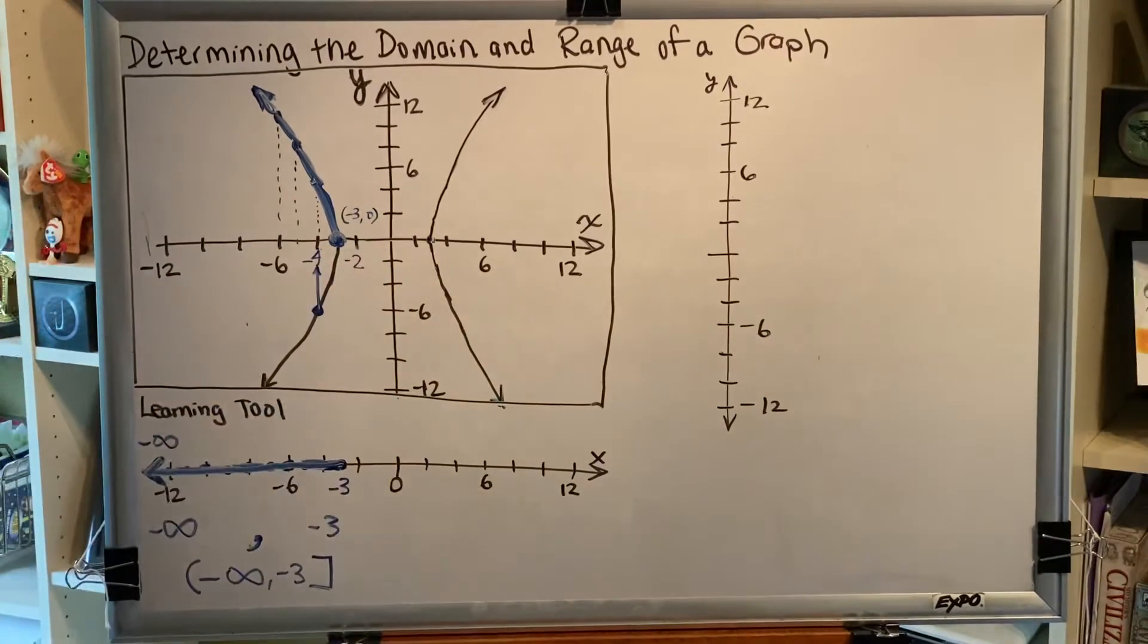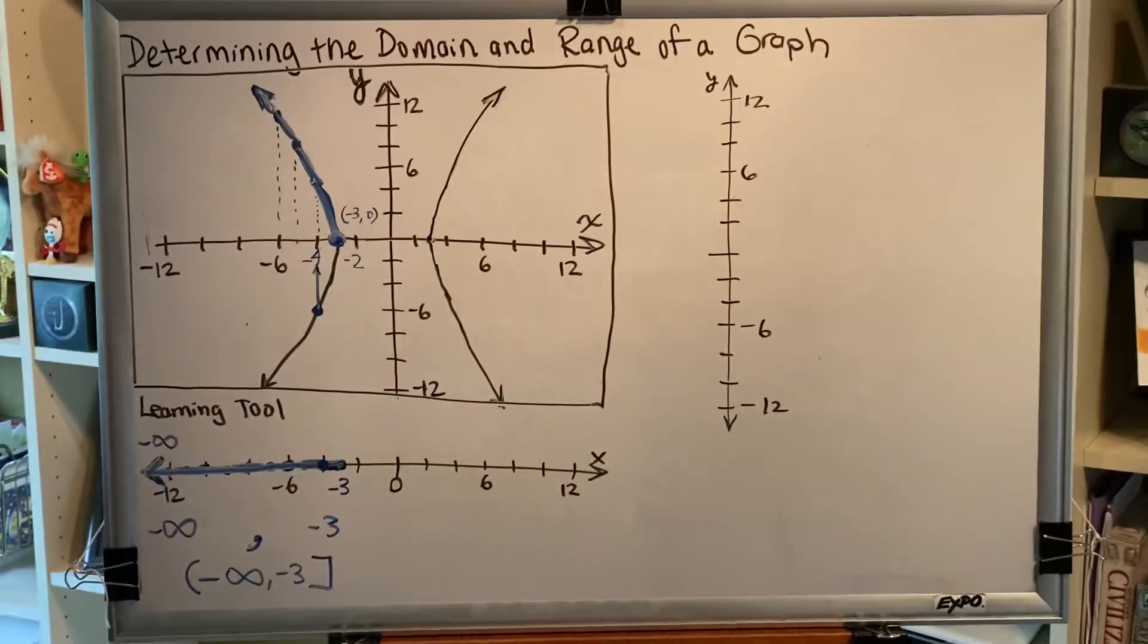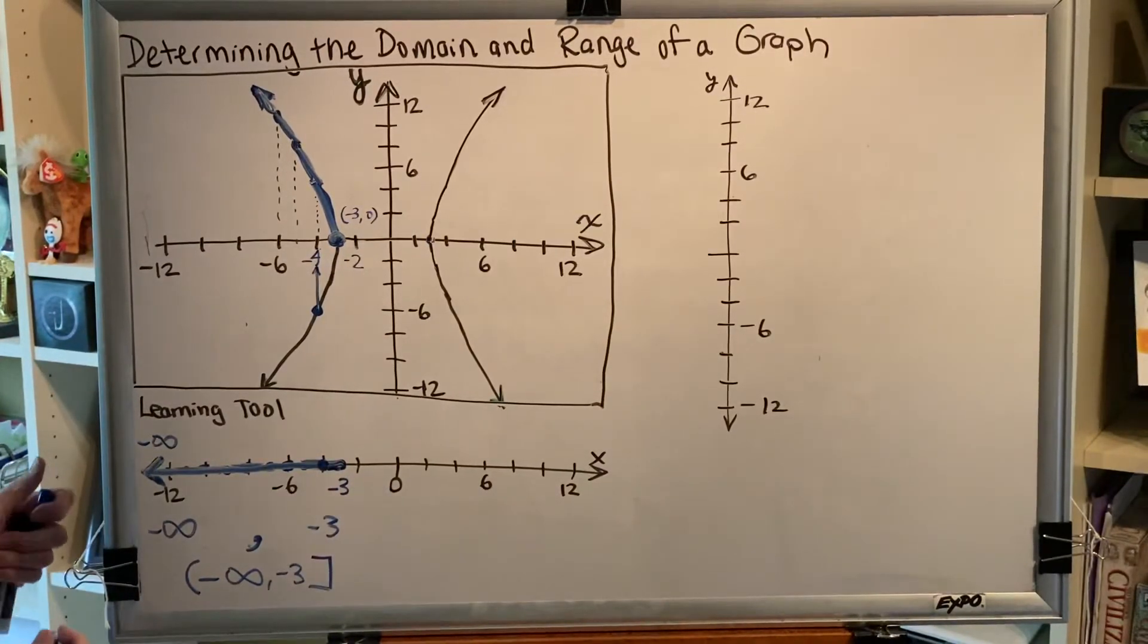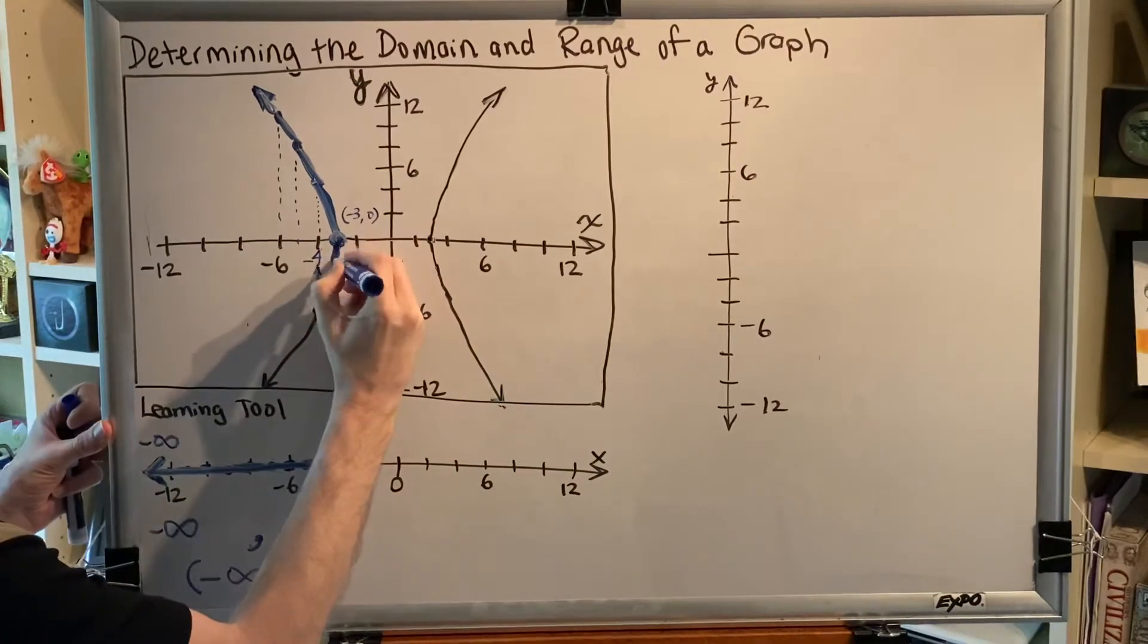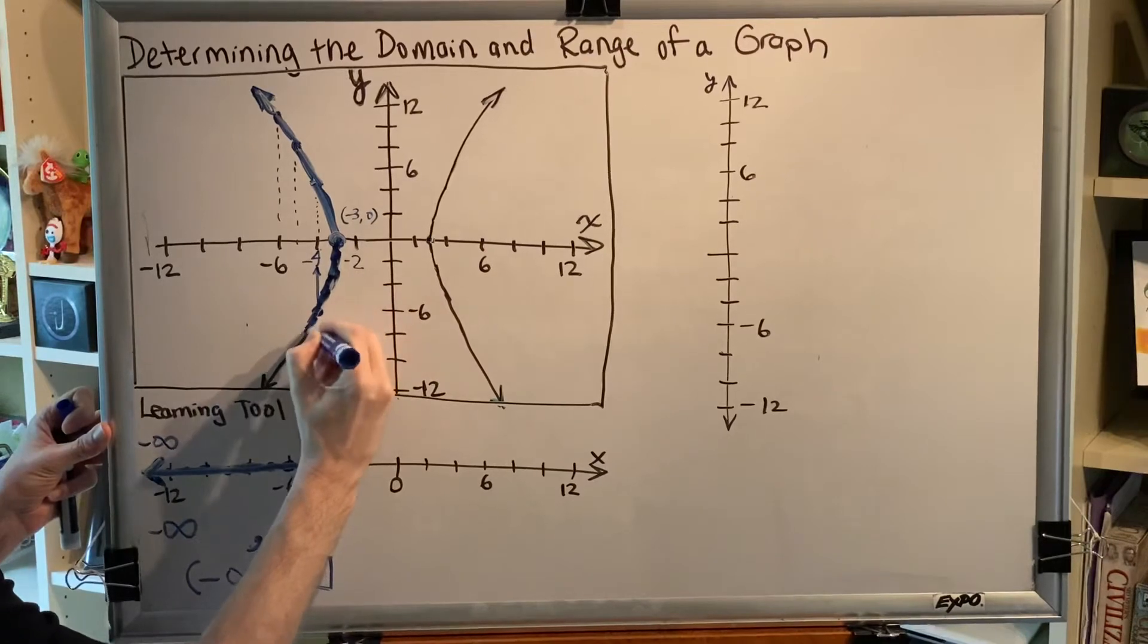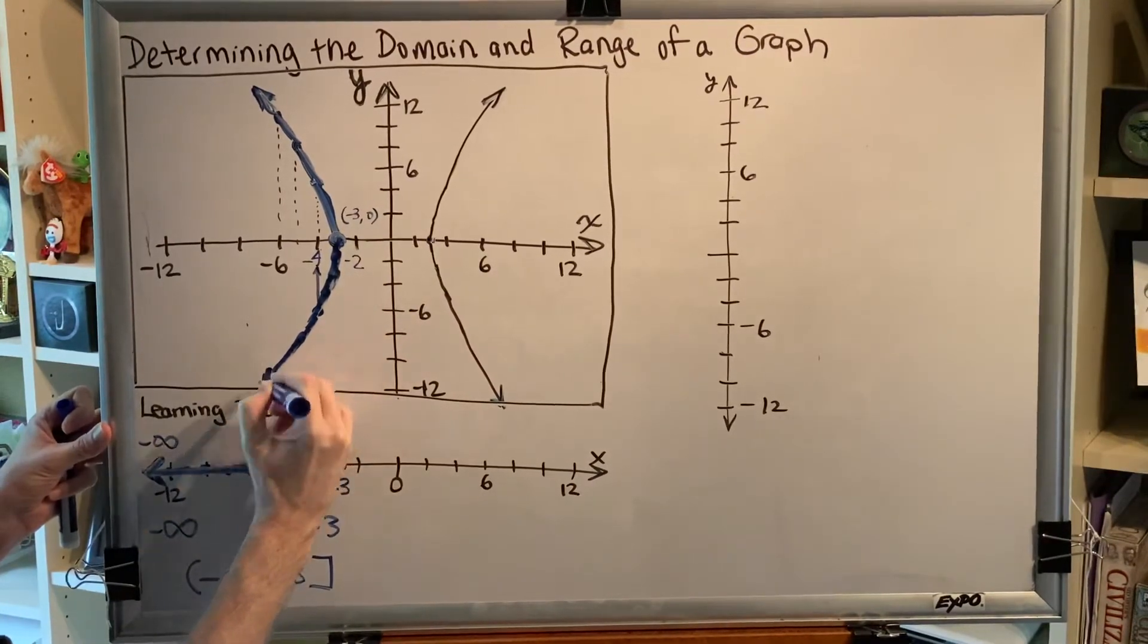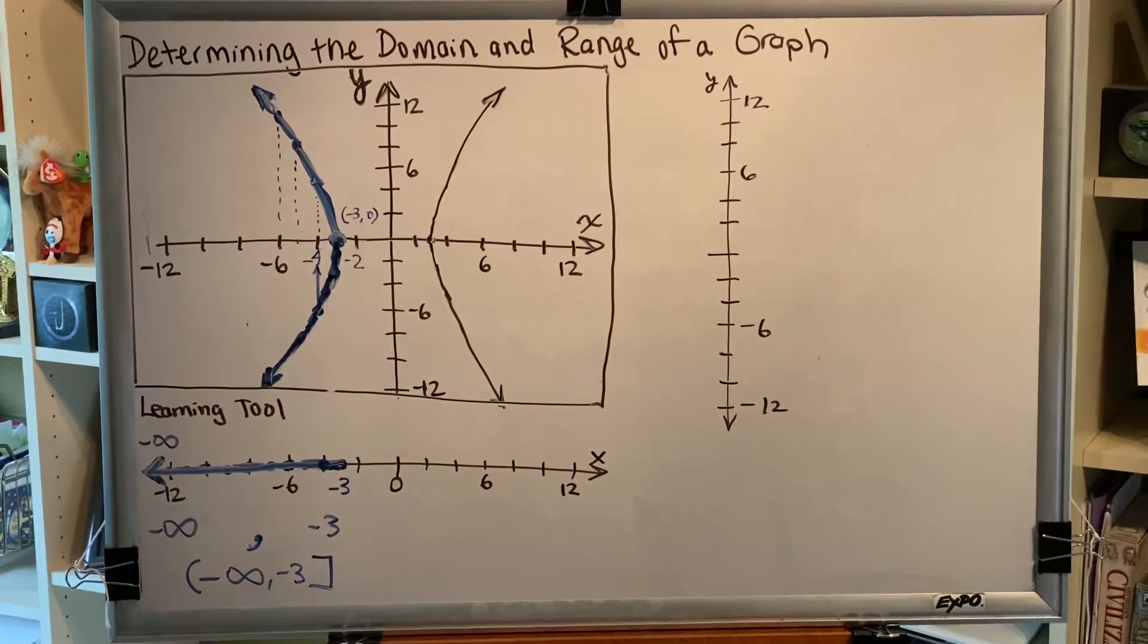The number negative 4 is already in this interval. And in fact, if we tried to include any of these points down here, we would find that every single one of them is duplicating values of x that we have already included in our collection of numbers. We get no new information.